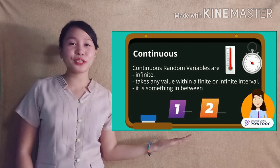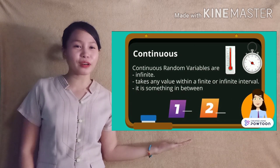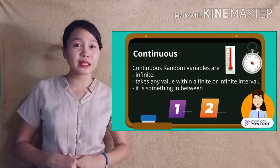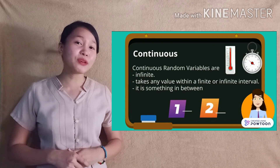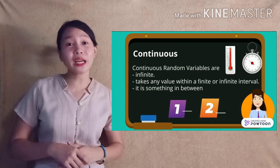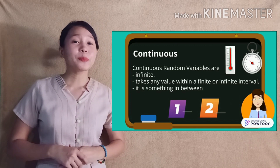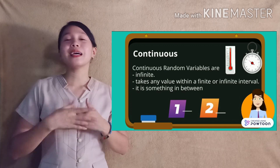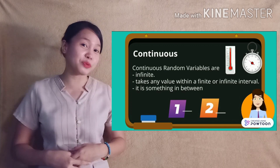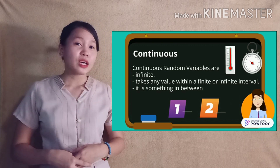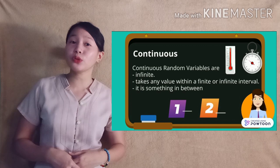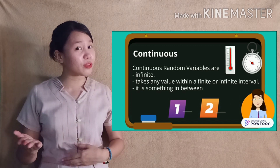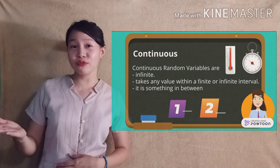Next is continuous random variables. Continuous random variables are infinite, take any value from a finite or infinite interval, and it is something in between. It is generally a result of measuring something. So from 1 to 2, you could consider 1 and a half, 1 and a fourth, or 1 and 3 fourths.